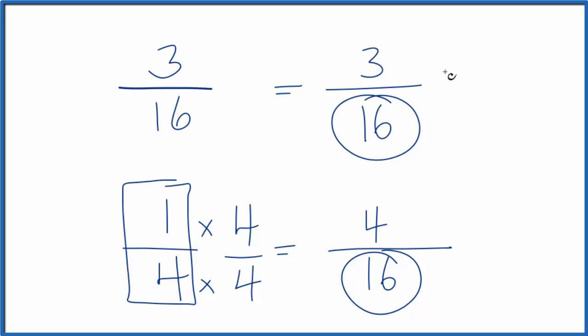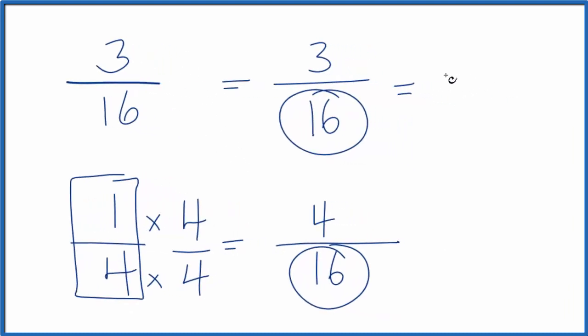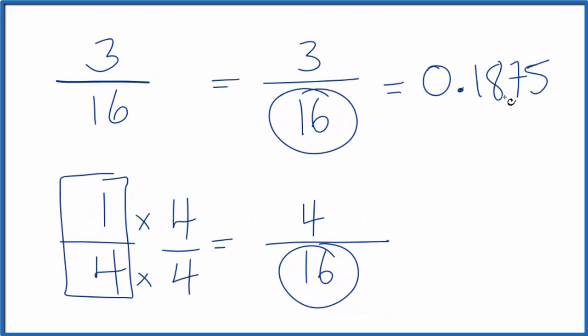We could also divide 3 by 16. When we do that, let's just round this to 0.19. Down here, 1 divided by 4, that equals 0.25. And you can see, again, 1 fourth is larger than 3 sixteenths. 0.25 is larger than 0.19.